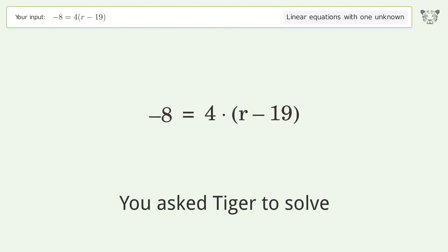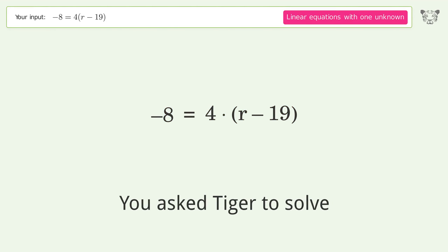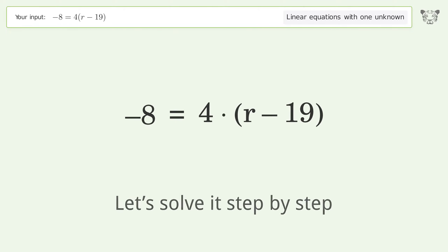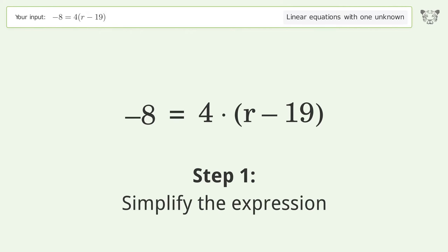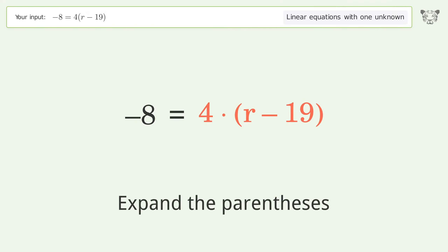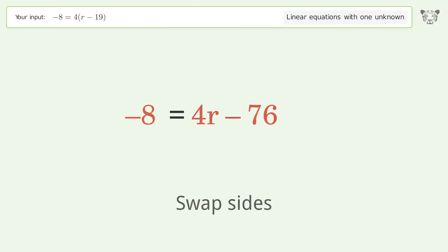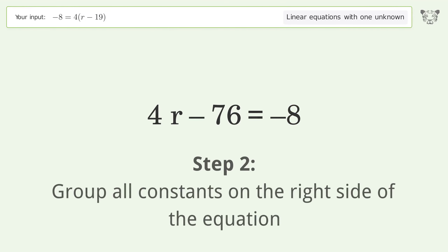We ask Tiger to solve this — a linear equation with one unknown. The final result is r equals 17. Let's solve it step by step: simplify the expression, expand the parentheses, simplify the arithmetic, swap sides, and group all constants.